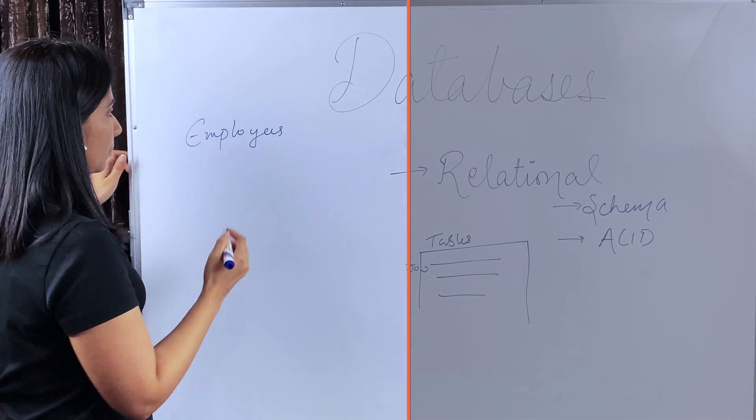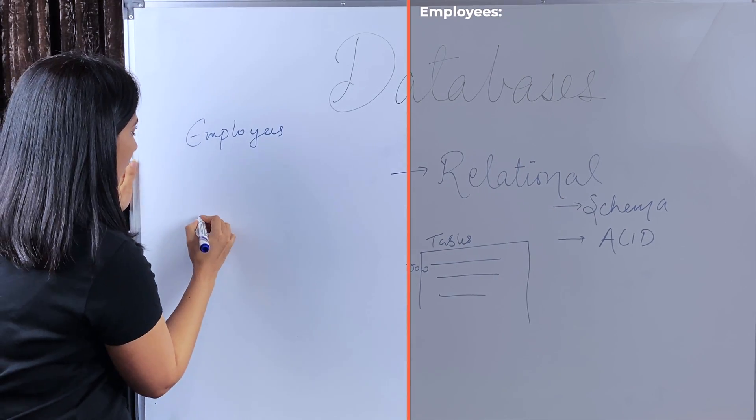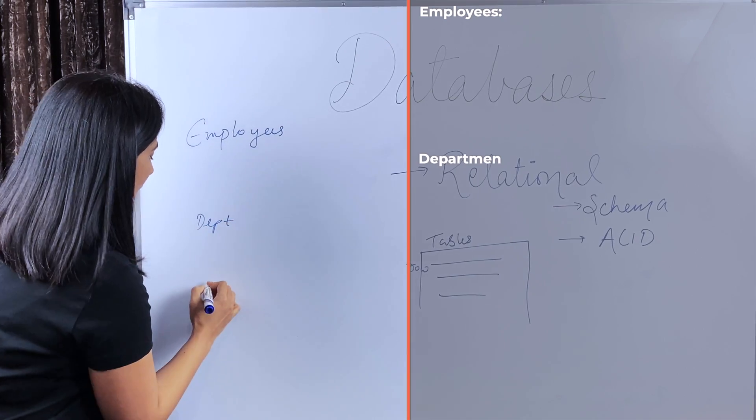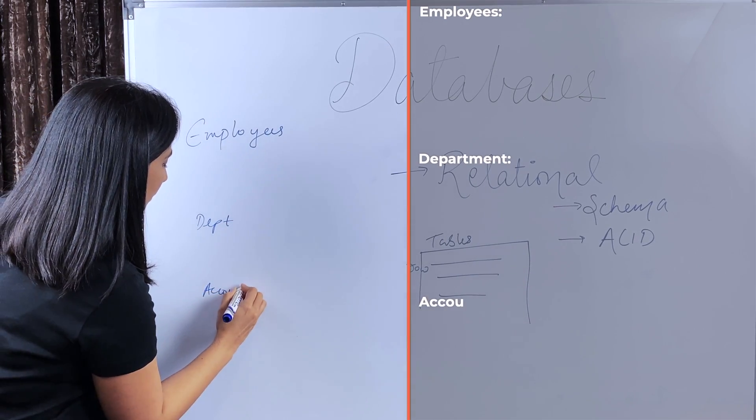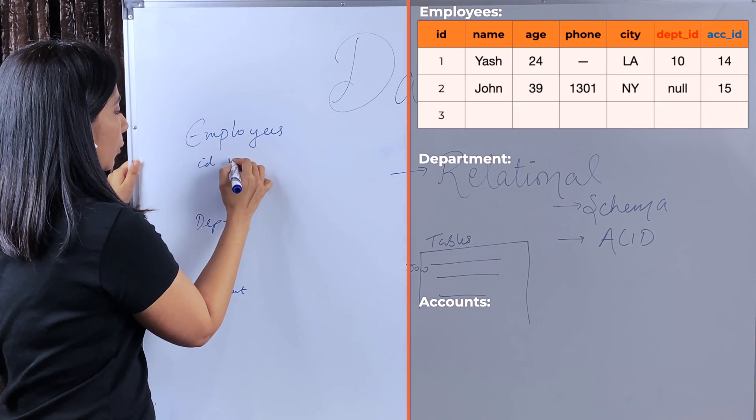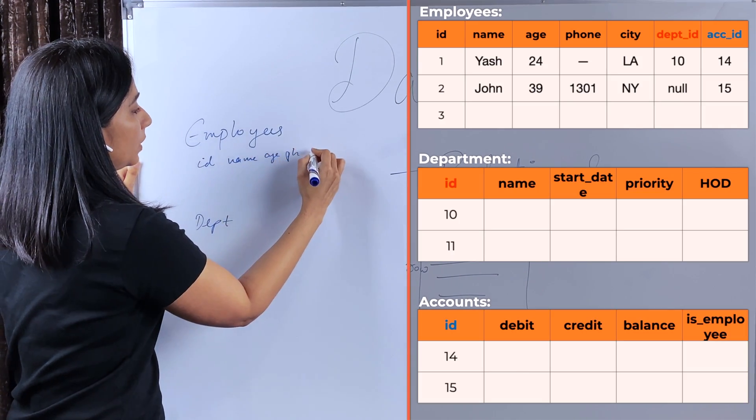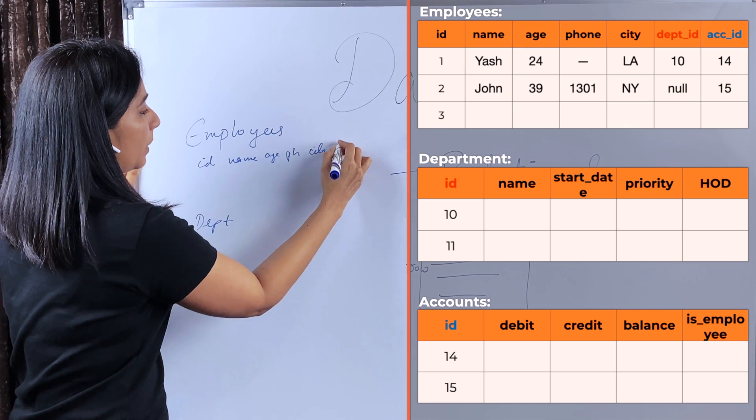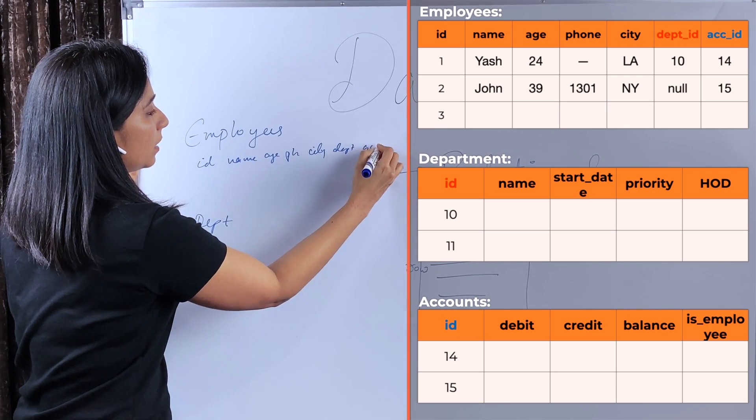A classic example is employees data. So you have an employees table, a department table, an account table. The employees table is going to store the data of employees like name, age, phone number, city, department ID, account ID, etc.